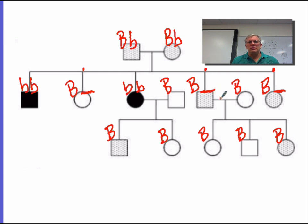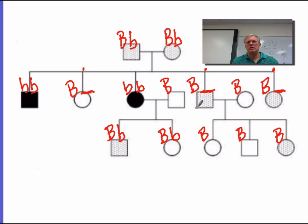Now let's look at this mom and dad and their kids. Can we figure out the alleles of any of these? We know that mom here has little b, little b, so she could only give a little b to her kids. So each of these children would have to have a little b. And the father could be big B, big B or big B, little b — so we do not know what goes in this blank.